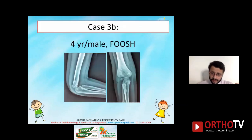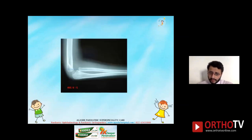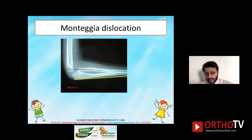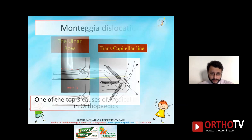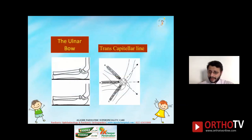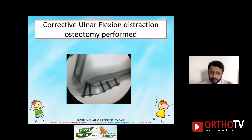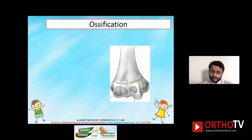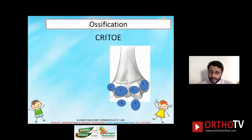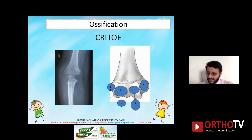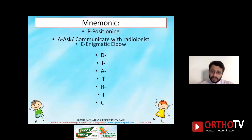Another case: a four-year-old male, fallen on an outstretched hand, X-ray reported as normal. But the radio-capitellar line is intersecting the humerus proximal to the capitulum and the Mubarakk's line is completely disrupted — this was a Monteggia fracture-dislocation, one of the top three causes of medical litigation in orthopedics. Remember the ulnar bow, Mubarakk's line, and the transcapitellar line. A missed Monteggia requires complex corrective ulnar osteotomy. Also remember the ossification centers mnemonic: CRITOE — Capitulum, Radial head, Internal epicondyle, Trochlea, Olecranon, External epicondyle. E is Enigmatic Elbow — be careful.